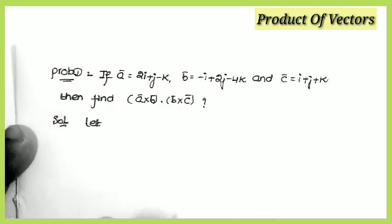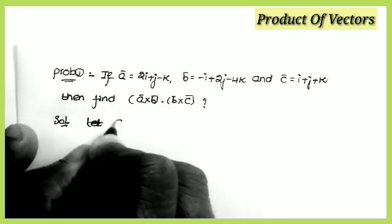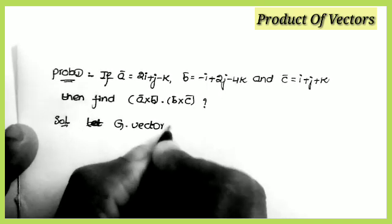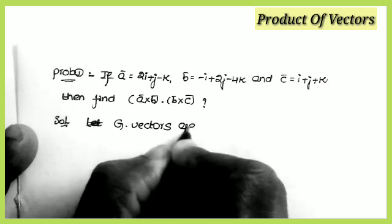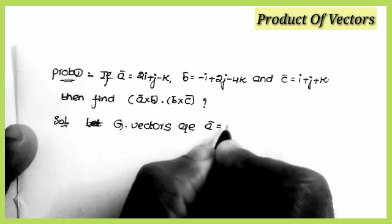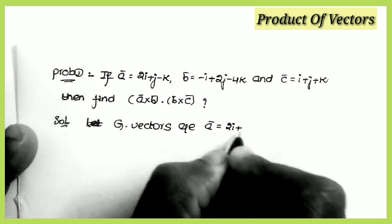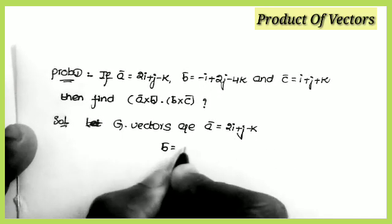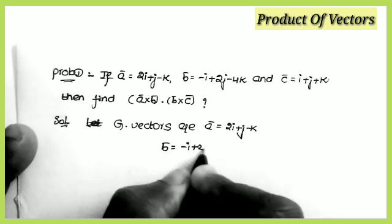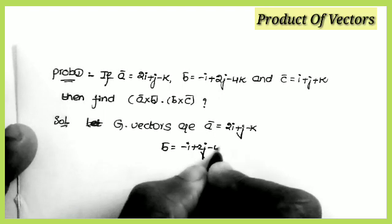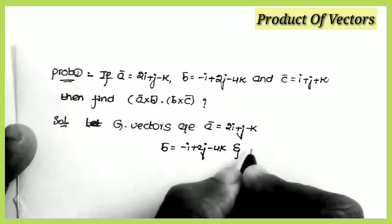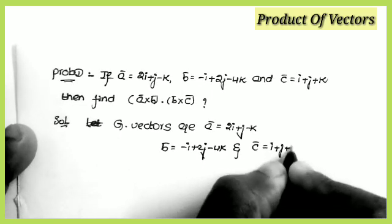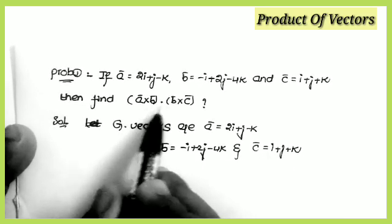Let us start the solution. First I am writing the given vectors here. a̅ = 2i + j − k, b̅ = −i + 2j − 4k, and c̅ = i + j + k. The given question asks for the value of (a×b)·(b×c).